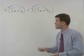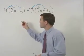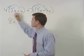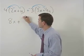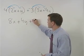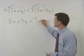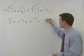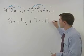That gives us 4 times 2x or 8x plus 4 times y or 4y plus negative 3 times 3x which is plus negative 9x plus negative 3 times negative 4y which is plus 12y.